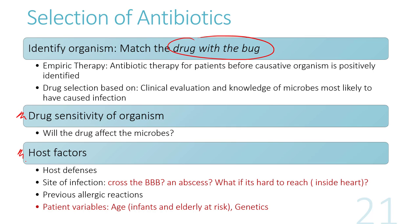The third consideration is host factors: Is the patient's immune system normal or compromised? The site of infection matters too — whether it's in the brain, inside an abscess, or inside the heart — because location determines the route of administration and duration of treatment. Previous allergic reactions must be documented, and patient variables such as age must be considered, since the very young and very old need different treatment, and there are also genetic considerations affecting host response to antibiotics.